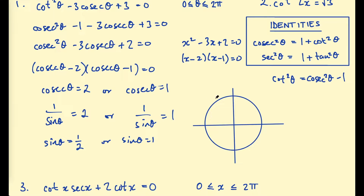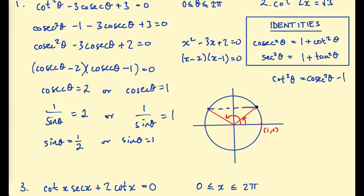If you're not familiar with this process yet, I encourage you to watch my video on solving trig equations and my video on the unit circle. On the unit circle, sin θ equals 1/2 means the y-coordinate of the point on the circle is 1/2. We want the angle of rotation to that point from (1, 0), and also the angle to the other point where the y-coordinate is 1/2.